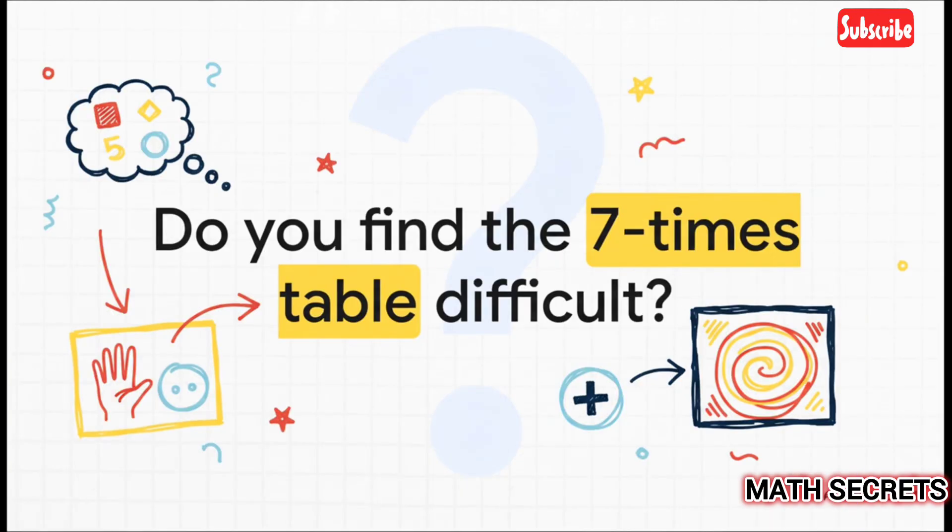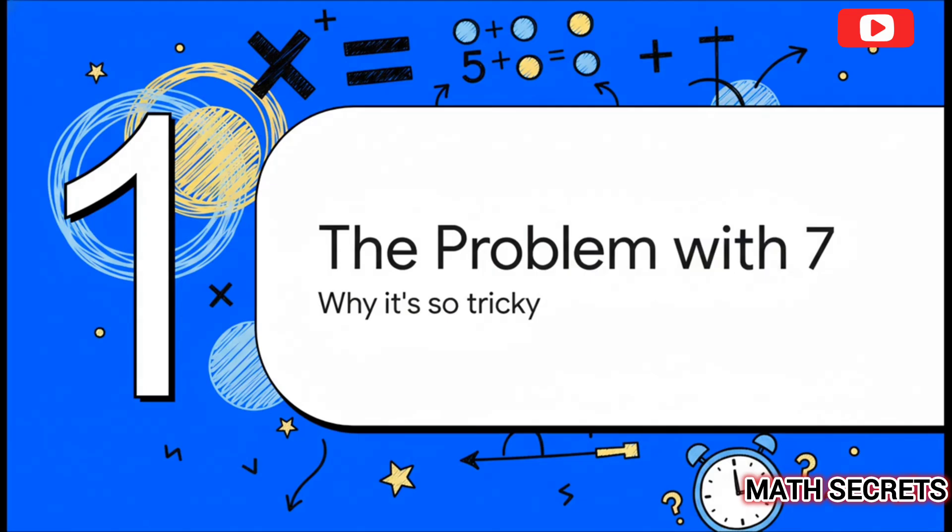I'm guessing most of you are nodding along right now. And if you are, trust me, you are not alone. For whatever reason, multiplying by seven just doesn't click the same way multiplying by five or ten does. It's kind of famous for being a mental roadblock. So let's start there. Let's figure out why this one number, seven, can be so tricky.